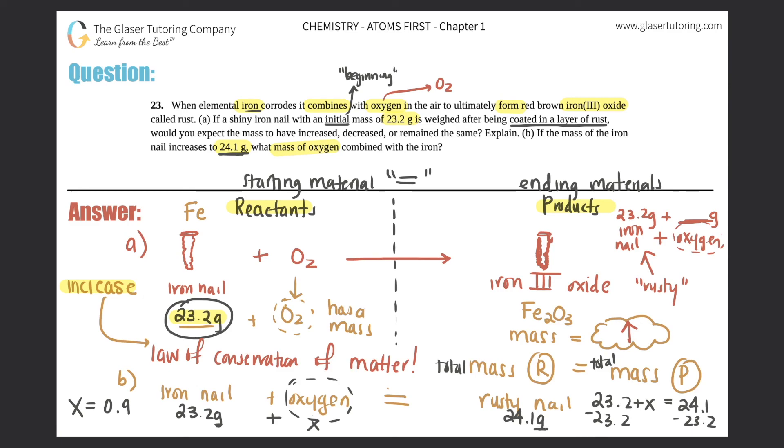The units have to match since this is in grams. So the oxygen mass has to be in grams as well. So that was the mass of the oxygen. The first part, the answer was the mass would increase because the products and the reactants have to equal each other. And the second part was 0.9 grams of O2. I hope this made sense. Please give us a like and subscribe. I'll see you all in the next lesson. Have an awesome day!